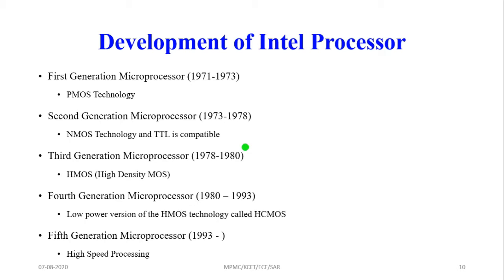The second generation microprocessor was developed from 1973 to 1978. These used NMOS technology, which offers faster speed and higher density than PMOS technology, and is also compatible with TTL technology.